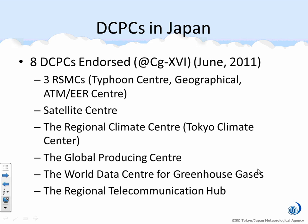Next is DCPC. In 2011, at the 16th World Meteorological Congress, JMA was endorsed for the following eight DCPCs: three regional specialized meteorological services, satellite center, regional climate center, global producing center, world data center for greenhouse gases, and regional telecommunication hub. In this lecture, I will pick up RSMC Typhoon Center, because I heard that Qatar is working to become a DCPC for marine forecast, and I think the Typhoon Center is similar and proper to talk about.